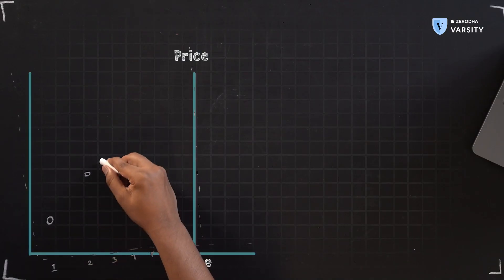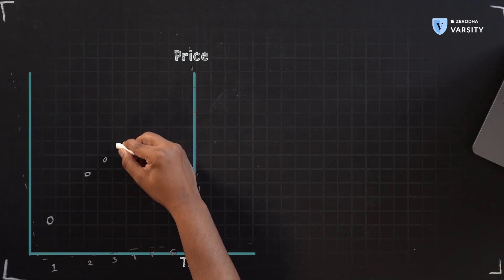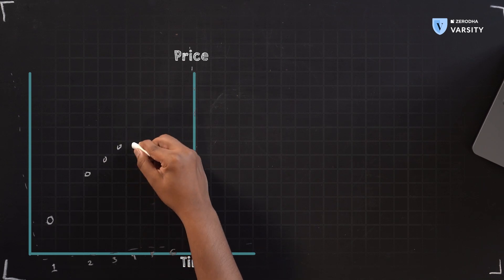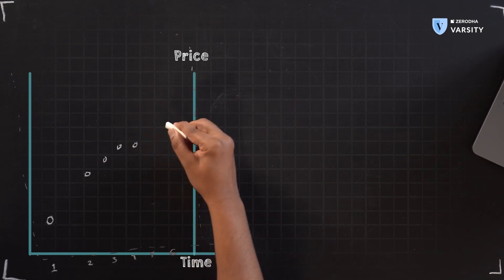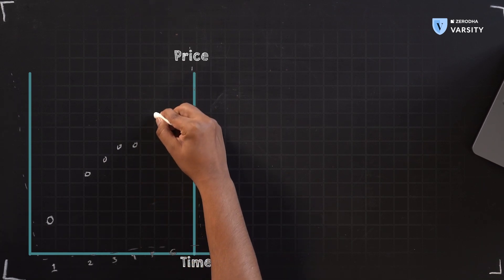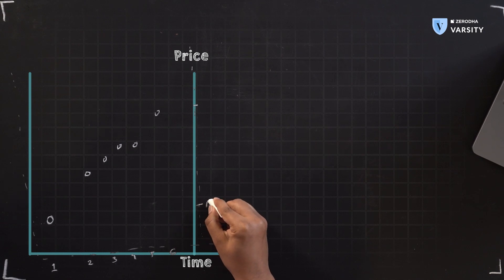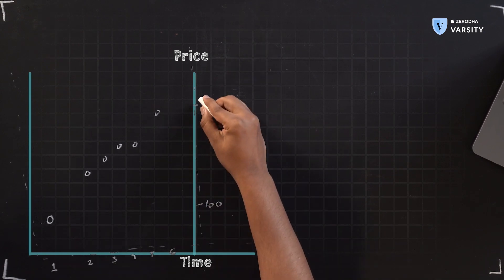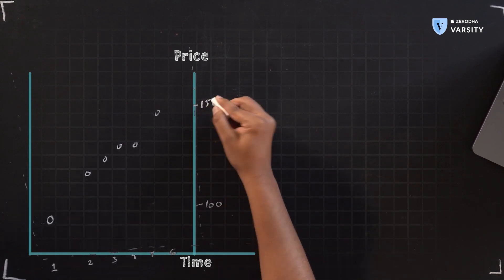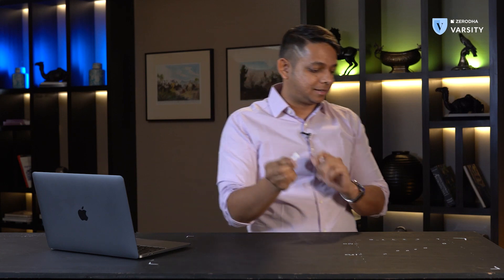In this example, every day Tata Motors is closing higher and higher. Sometimes it's sideways and then sometimes it's really high. The price scale here is from 100 to 150 in our example. What I'll also do is connect all these closing prices to form a line — and this is obviously a line chart.